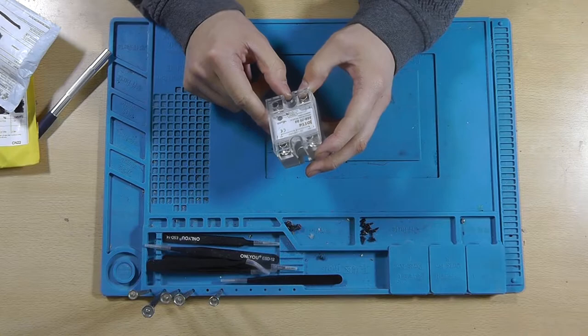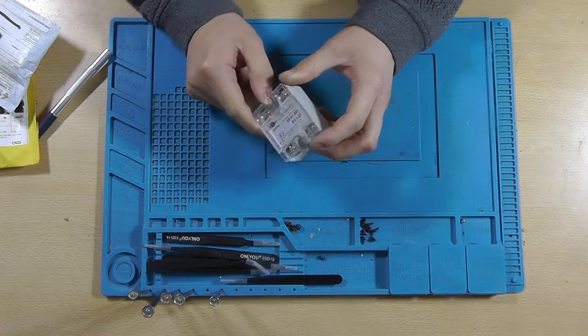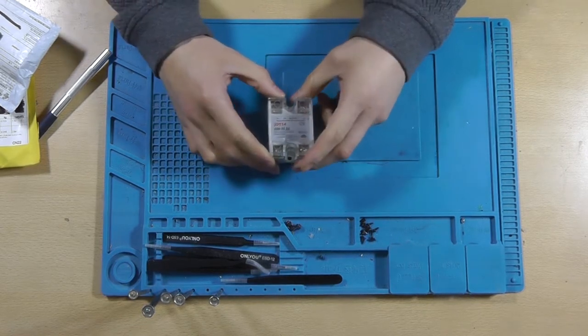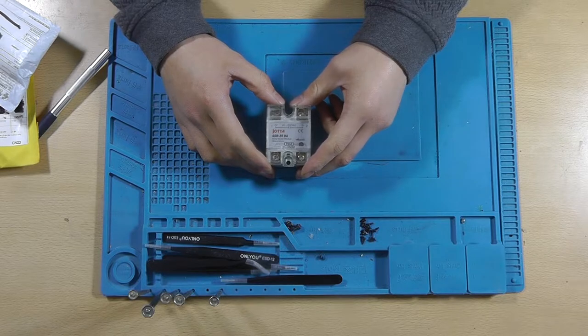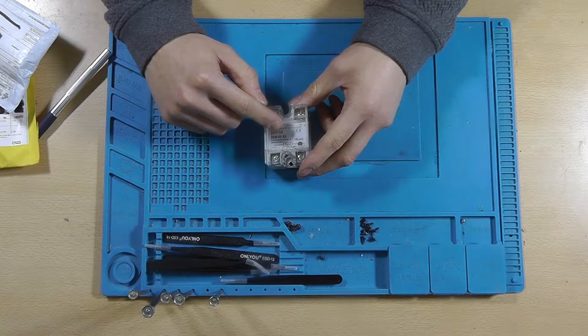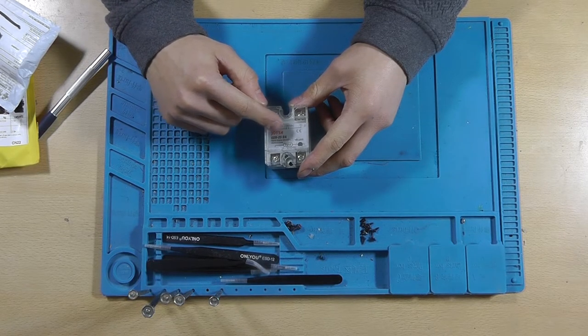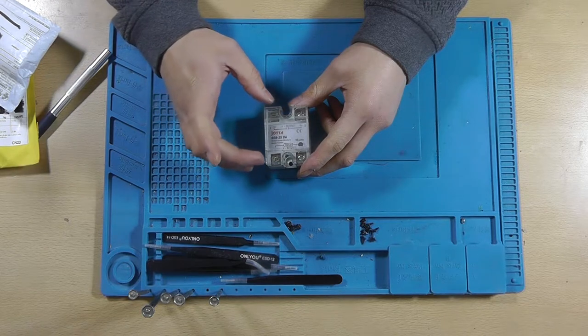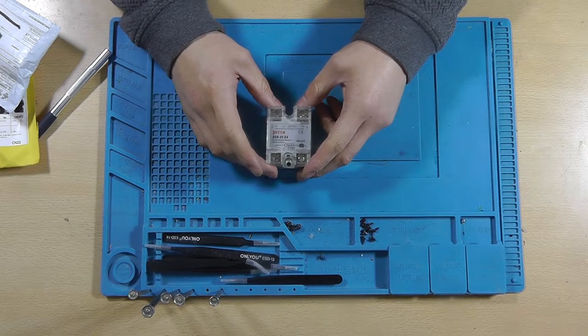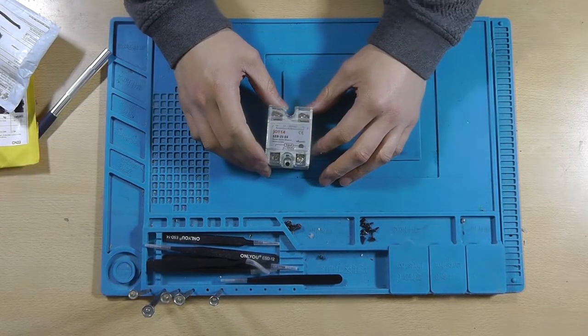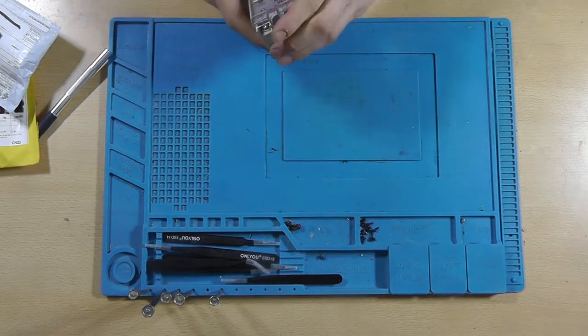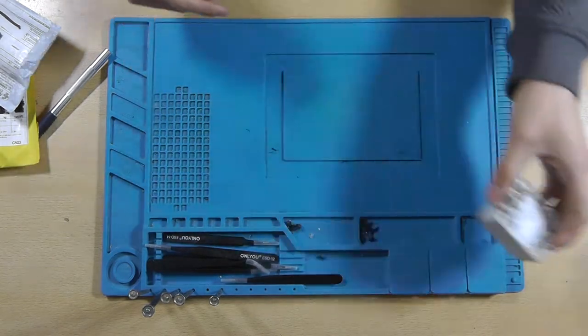And it's controlled by a 3 to 32 volts DC signal. Now that was the mistake I made last time when building my yet another reflow oven. I purchased a model where you're supposed to put AC on the control terminals and not DC, so that wasn't of any use for me. So I needed a new one. Solid state relay always nice.